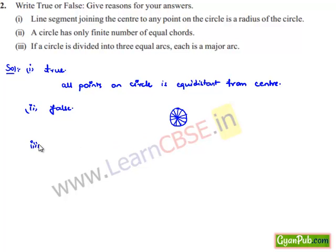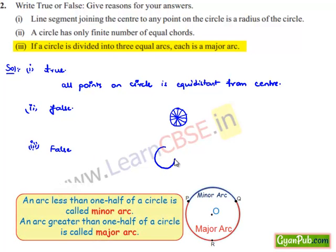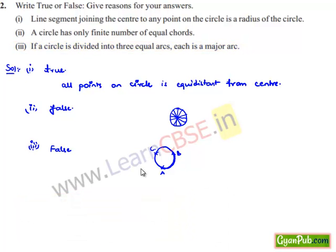Moving on to the third bit: if a circle is divided into three equal arcs, each is a major arc — that is false. If we consider a circle divided into three equal arcs AB, BC, and CA, and we consider AB as the arc, then the other arc ACB will be the major arc. But AB, AC, and CB cannot each individually be major arcs.